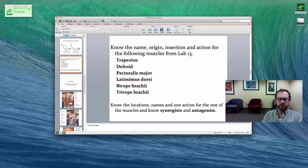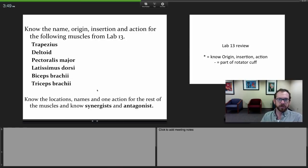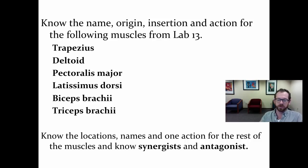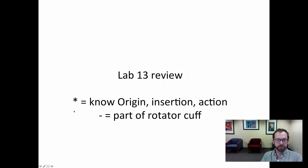For your upcoming quiz, you need to know the location, name, one action, one synergist, and one antagonist for any muscle covered in this AV lecture. In addition, there are six muscles for which you also need to know one origin and one insertion: the trapezius, deltoid, pectoralis major, latissimus dorsi, biceps brachii, and triceps brachii. On this PowerPoint, an asterisk marks those six muscles, and a dash indicates a muscle that's part of the rotator cuff group.